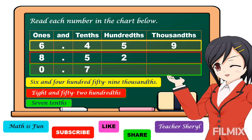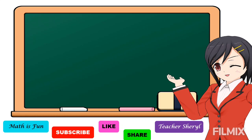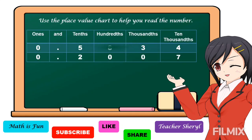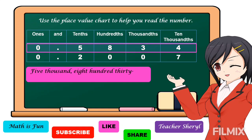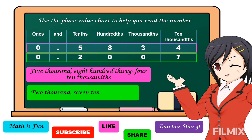This is the way how we read a decimal number. In our next examples, we don't have whole numbers, so we read directly to our decimal numbers — as if reading whole numbers first, then we say the place value of the last digit. For the first number, we read this one as 5,834 ten-thousandths. For the second number, we read this one as 2,007 ten-thousandths. This is the way how we read and write decimal numbers.